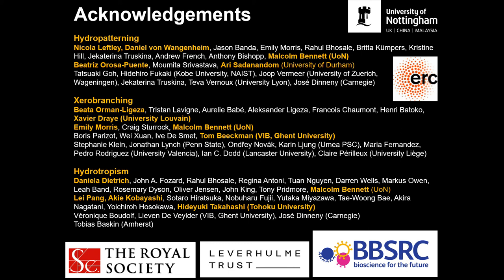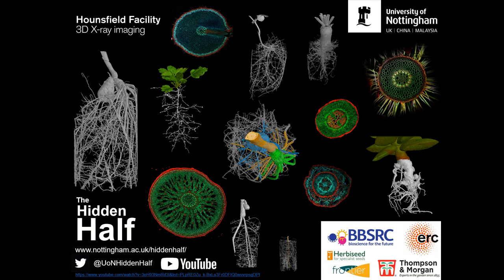Before I stop, I'd like to point you to the Hidden Half website at the University of Nottingham, which was mentioned at the very first day of the conference. The Hidden Half website has lots of 3D X-ray images of different root systems from a whole range of plant species — from Norway spruce to date palm — including time course experiments and cross-sections of different roots. If you haven't already done so, I'd encourage you to have a look at the website. You can also find us on Twitter and YouTube. Thank you for your attention.